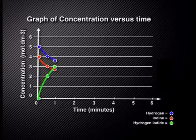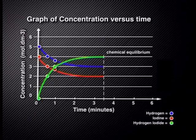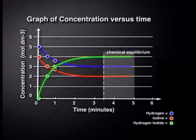In the next half-minute time interval, only half a mole of hydrogen and iodine are used up and one mole of product is formed. In the next time interval, less reactants are used up and less product molecules form. Notice, from three and a half minutes to five minutes, the lines on the graph are all horizontal lines parallel to each other. We say that chemical equilibrium is established.